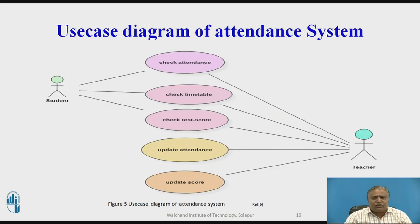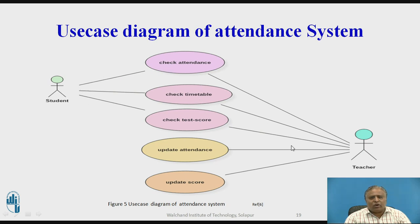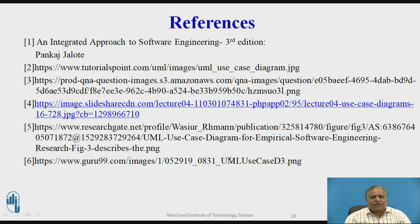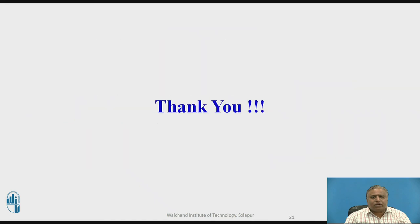This is the use case diagram of an attendance system, where the student and teacher are the actors. The use cases include: check attendance, check timetable, check test score, update attendance, and update score. The student interacts with checking attendance, checking timetable, and checking the test score, while the teacher interacts with updating attendance and updating scores. These are the references. Thank you.